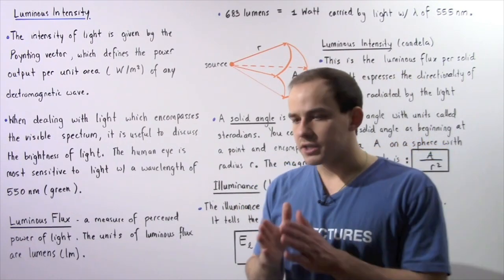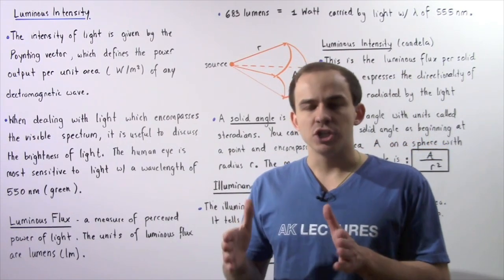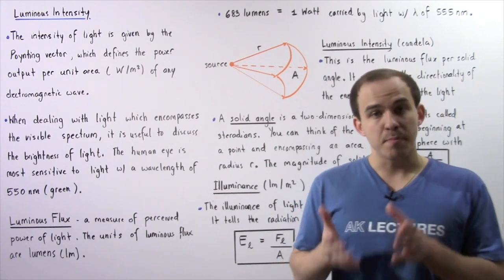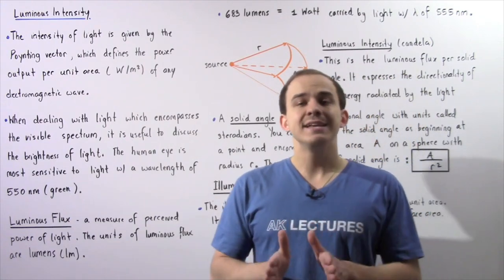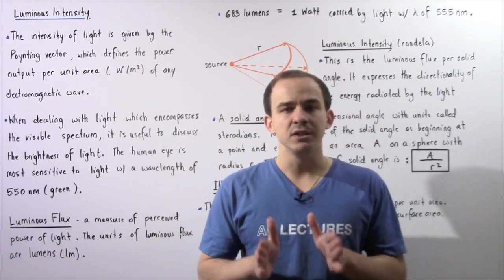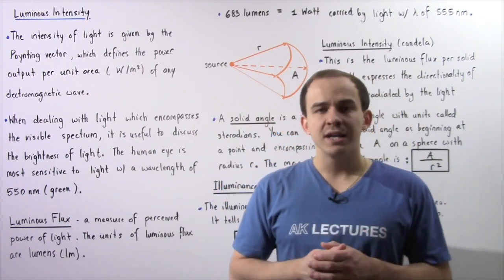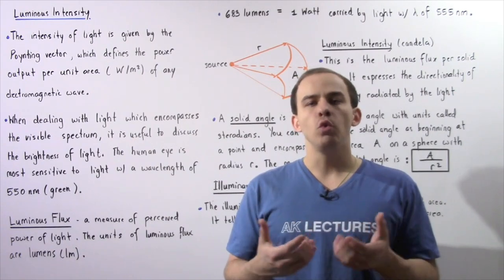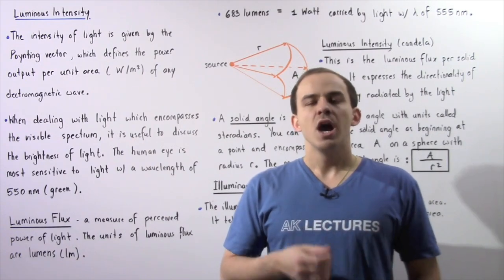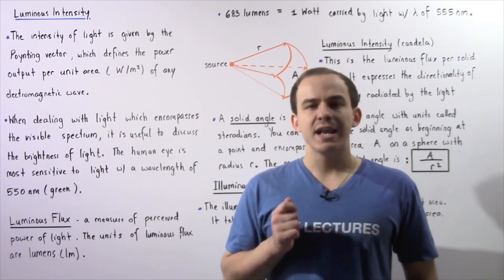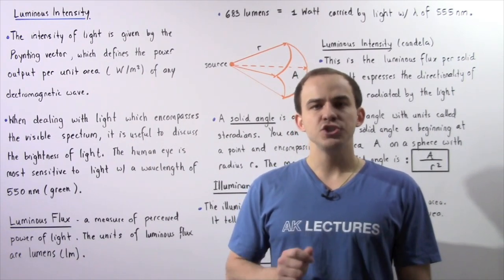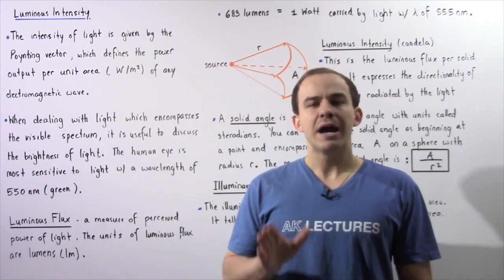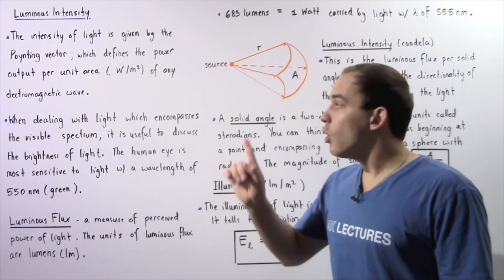One very important section of the electromagnetic spectrum is the visible light spectrum, and that's because visible light is the only form of electromagnetic radiation that is perceived by the human eye.